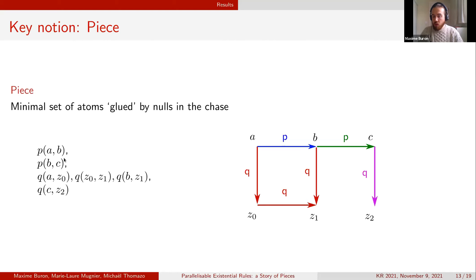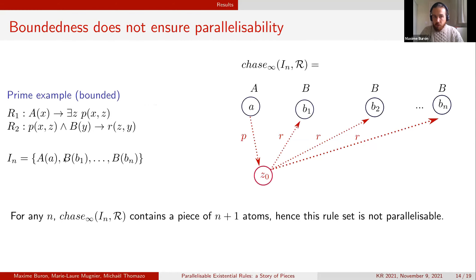The counterexample is the following, we call it the prime example and it is bounded by a bound equal to two. It contains two rules that are R1 and R2 and we will consider it with a set of instances which will contain one a and n b's.